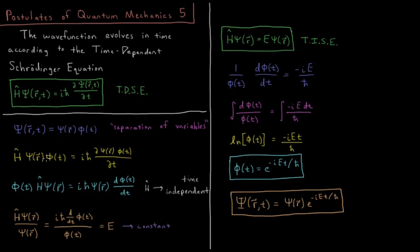We get H psi of R phi of t equals I h-bar d phi of t dt. And we have the Hamiltonian, which if we assume is time-independent, so there's nothing in our Hamiltonian, our total energy operator that depends on time,